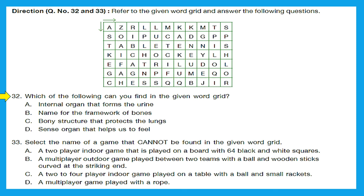Questions 32 and 33 refer to a given word grid. Question 32: which of the following can you find in the word grid — kidney (internal organ forming urine), skeleton (framework of bones), rib cage (bony structure protecting the lungs), or skin (sense organ for feeling)? Searching left to right and top to bottom, I found rib cage. So option C is the right answer.